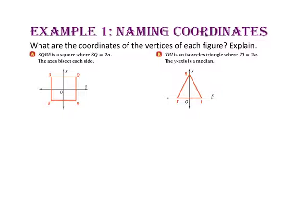In example A, we will name coordinates. What are the coordinates of the vertices of each figure? In part A, quadrilateral SQRE is a square where the length of segment SQ equals 2A. Now we know that because it's a square, all the sides are going to be congruent, so each side will be 2A units long. The second part tells us that the axes bisect each side. We know that bisect means to create two congruent parts. So where the x-axis intersects side SE and side QR, each portion above and below will be half of 2A, or A units long.